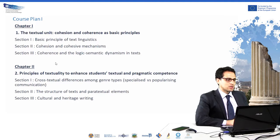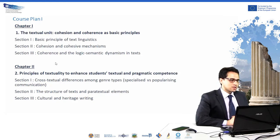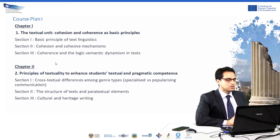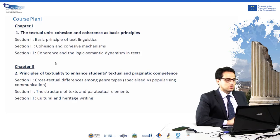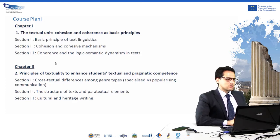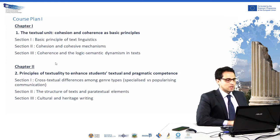These are the plans of the course. This course is divided into five chapters. The first one is devoted to textual units, in particular to the basic notions of cohesion and coherence as basic principles for text analysis. Section one is devoted to basic principles of text linguistics. Section two is devoted to cohesion and cohesive mechanisms. Section three is devoted to coherence and logico-semantic dynamics in text.